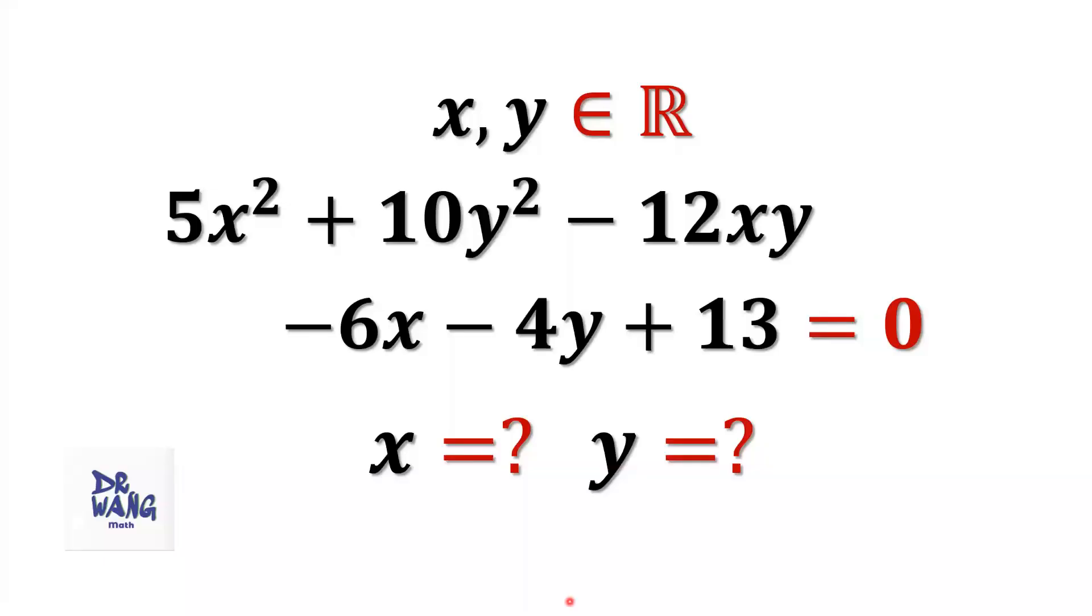Hello everyone, I'm Dr. Wen. Here is the question. If x and y are real numbers, 5x² + 10y² - 12xy - 6x - 4y + 13 = 0, what are the values of x and y?